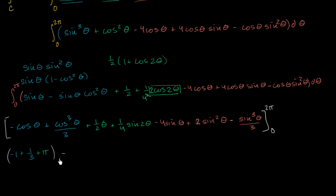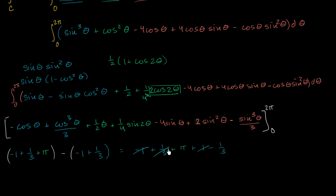From that, we subtract everything evaluated at 0. Cosine(0) is 1, and with the negative sign that's negative 1. Then plus one third. All other terms at 0 are zero. So we get: (−1 + 1/3 + π) minus (−1 + 1/3), which gives negative 1 plus one third plus pi, plus 1 minus one third. The ±1 terms cancel, the ±1/3 terms cancel, and we deserve a drum roll — it all simplifies to just pi. It was actually a little simpler to directly evaluate the line integral than using Stokes' theorem.